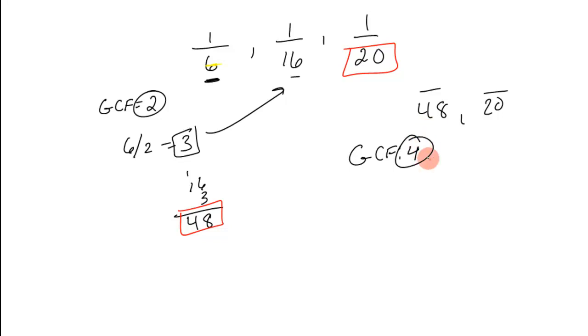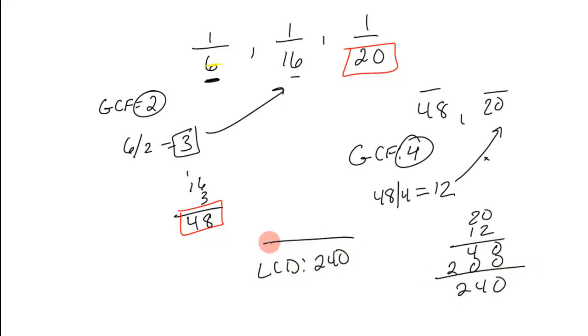Now, I divide it out of one of those. 48 divided by 4 equals 12. And then multiply it over here. 20 times 12. Looks like 240. So after all that work, the LCD is 240.